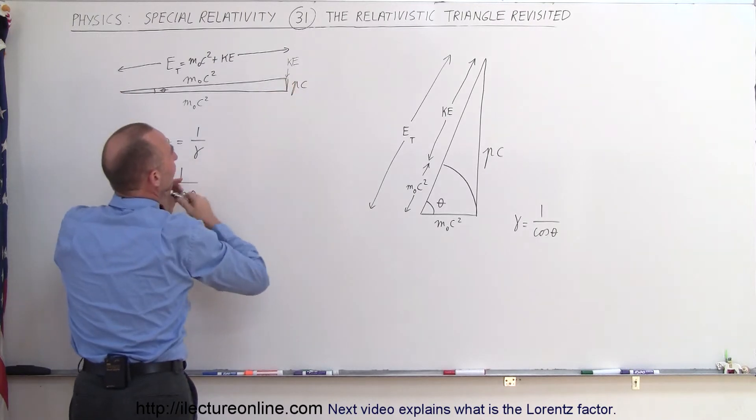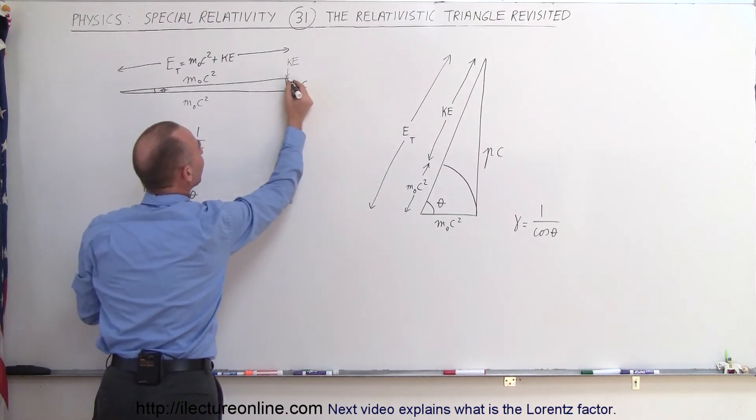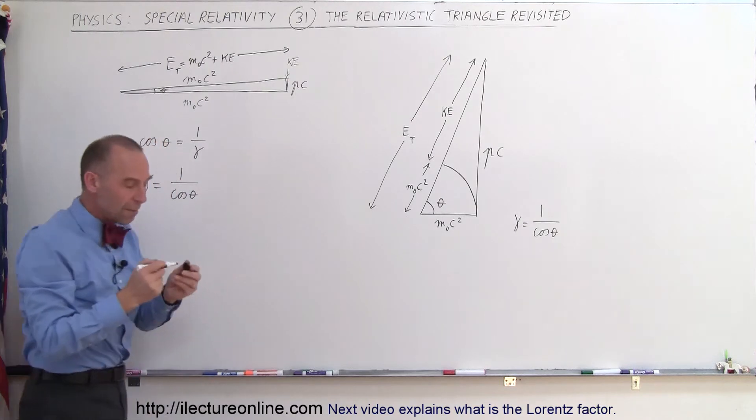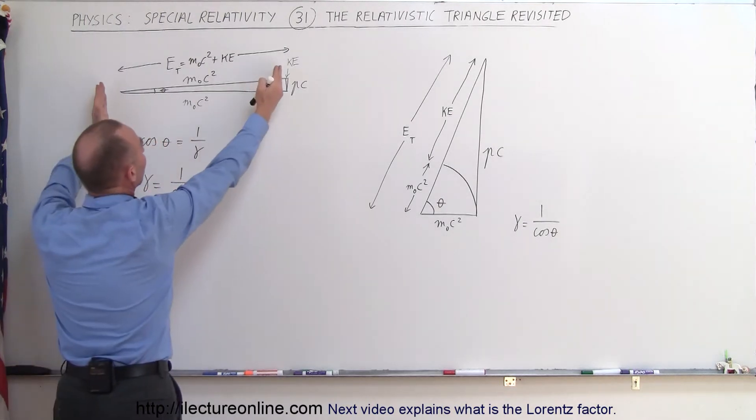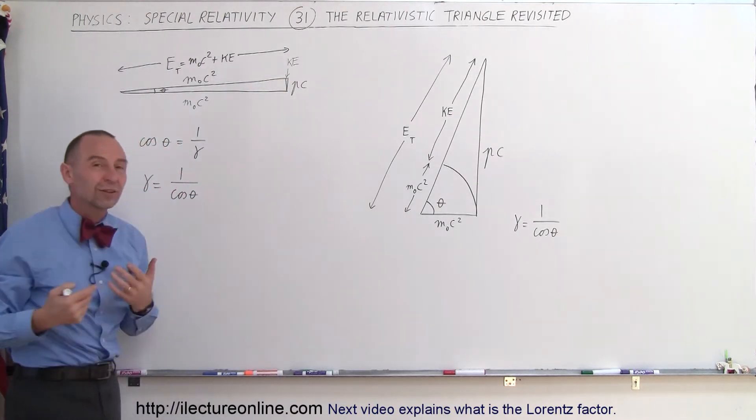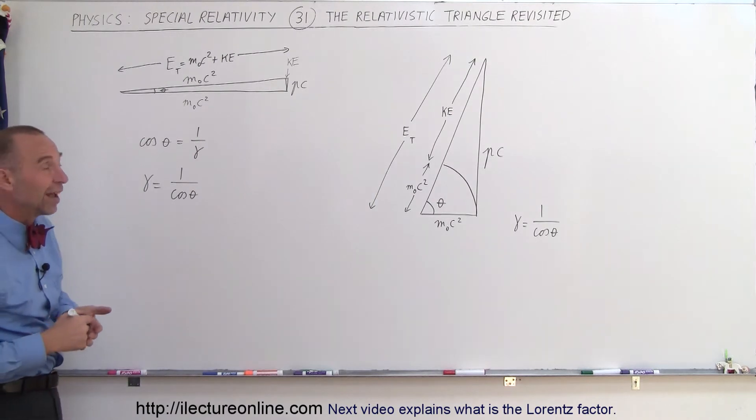which then represents the kinetic energy, it's a very small amount relative to the rest mass energy, which would indicate that the object relative to the speed of light is not going very fast.